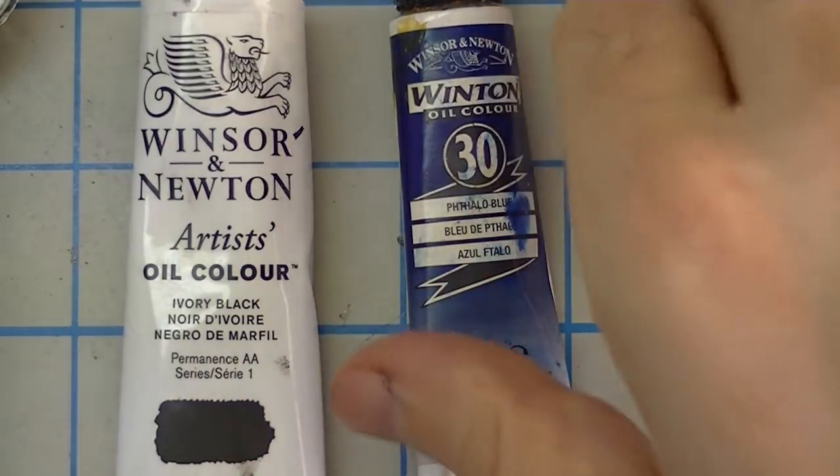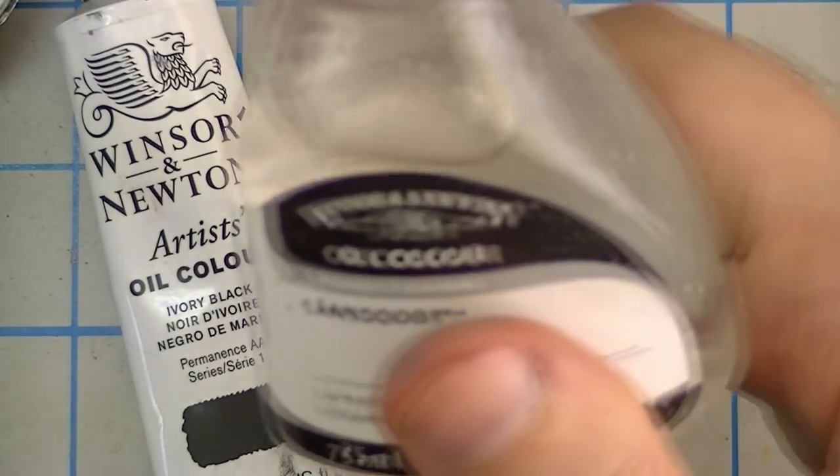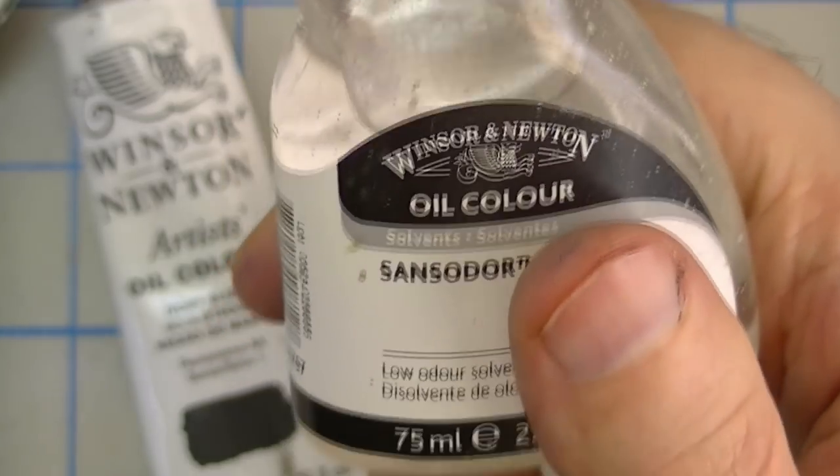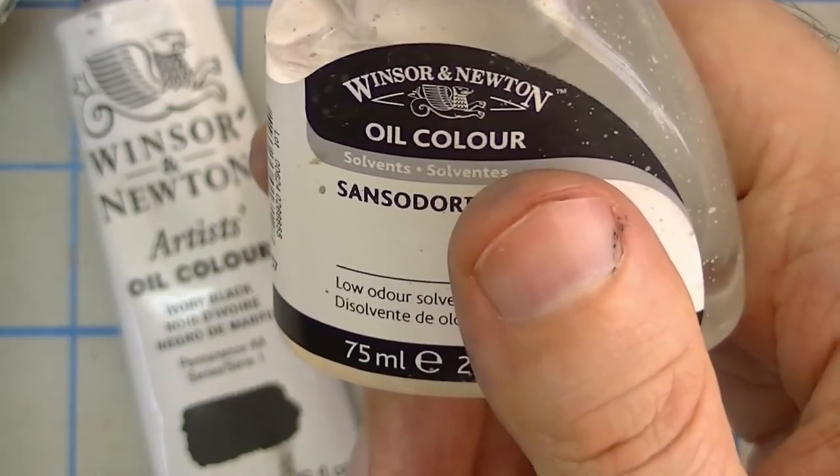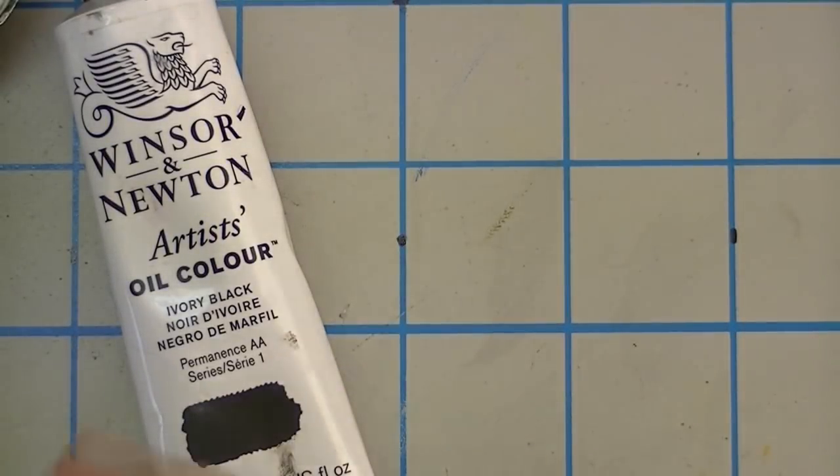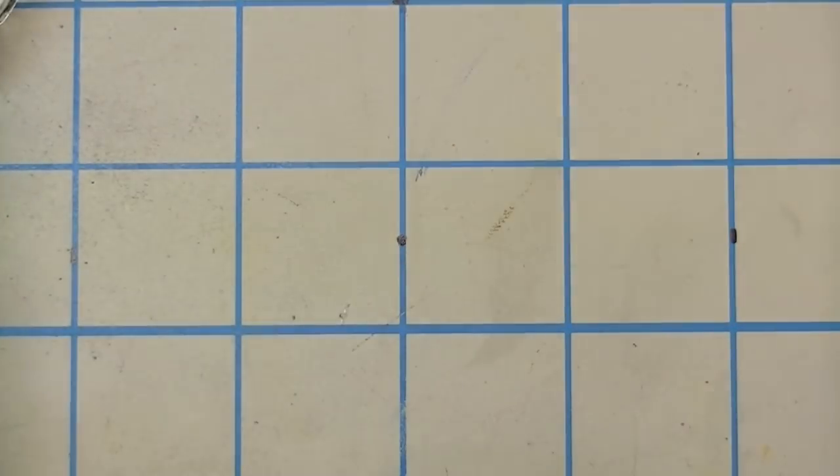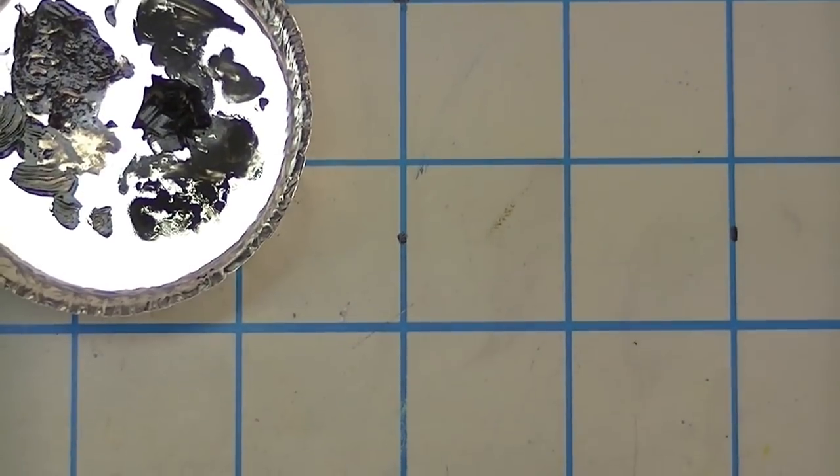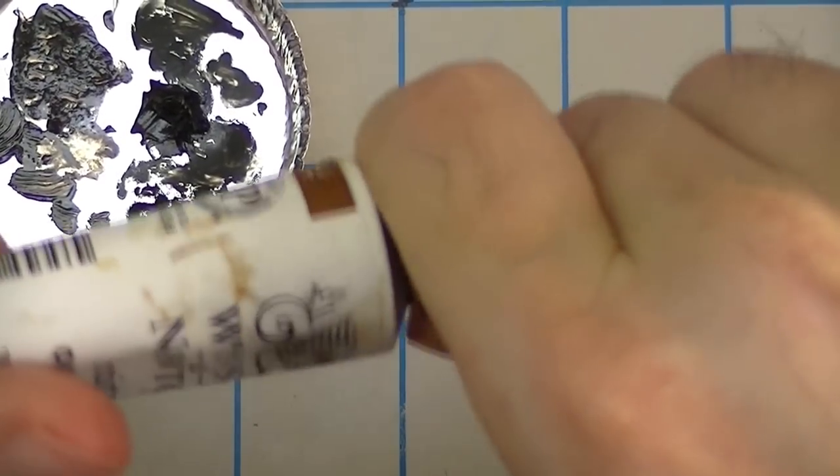Now speaking of thinners, you need some mineral spirits. You can use regular old hardware store mineral spirits for washes, but I've taken to using this Winton sans odor, which is just an odorless mineral spirits. That basically means it's been refined to have the sulfur compounds taken out of it, and that's what gives regular mineral spirits that sort of diesel smell. It's good stuff and seems to allow the materials to flow a little better, seems to be a little smoother. I like the Windsor Newton sans odor.